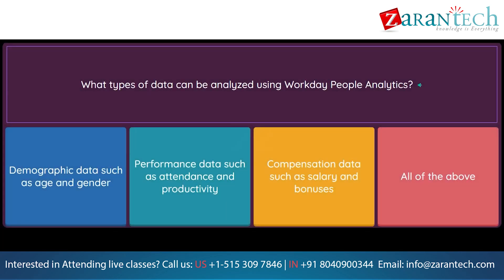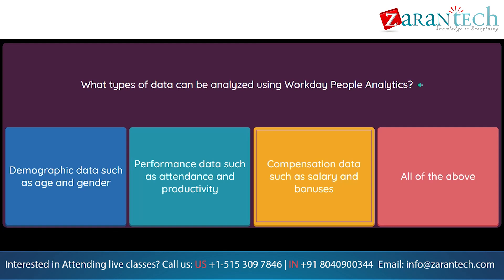Question: What types of data can be analyzed using Workday People Analytics? Option 1: Demographic data such as age and gender. Option 2: Performance data such as attendance and productivity. Option 3: Compensation data such as salary and bonuses. Option 4: All of the above.